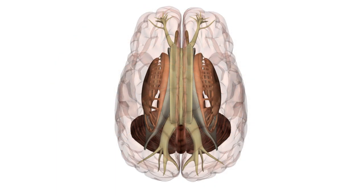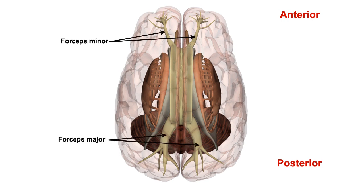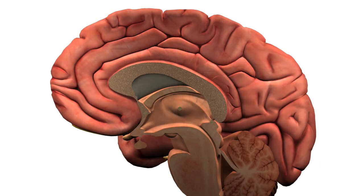When viewed from above in section, these fibre bundles look like the blades of scissors, or the prongs of forceps. You will also see that the posterior bundle is significantly larger than the anterior bundle. These bundles are termed the forceps major and forceps minor, respectively. In between these two fibre tracts is the trunk, or body, of the corpus callosum, which is made up of fibres that connect equivalent regions of the superior and lateral areas of the cortex.